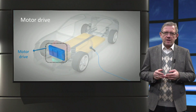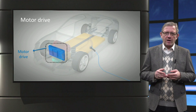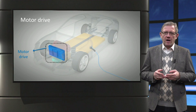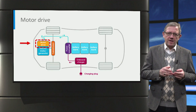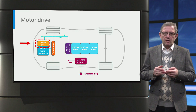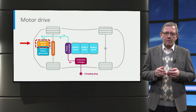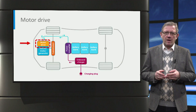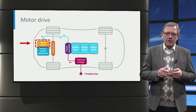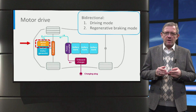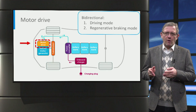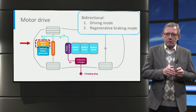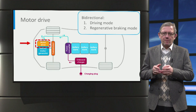The next component is the motor drive. The motor drive controls the speed, torque and rotational direction of the motor. Depending on the motor, the motor drive is a DC-to-AC inverter or a DC-to-DC converter that is used to control the power flow between the battery and the motor. Unlike the power converters we have seen earlier, the motor drive is a bi-directional converter capable of delivering power to the motor for propulsion but also removing it from the motor for regenerative braking.